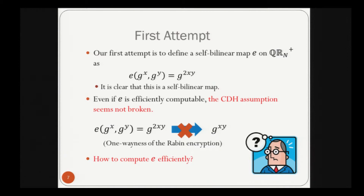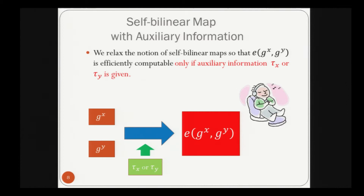If we cannot compute it efficiently, it is almost meaningless in cryptography. So we have to find a way to compute E efficiently. To do so, we relax the notion of self-bilinear maps so that E(g^x, g^y) is efficiently computable only if auxiliary information τ_x or τ_y is given. We call this relaxed notion a self-bilinear map with auxiliary information.